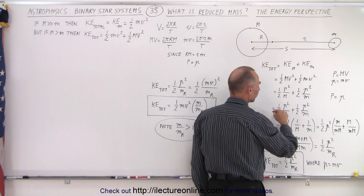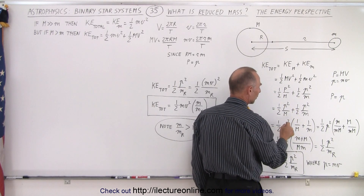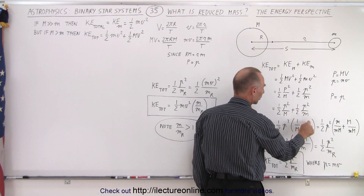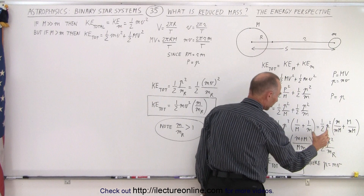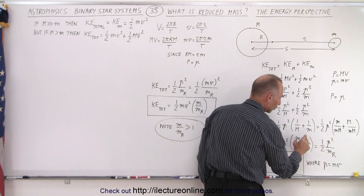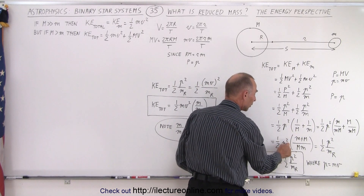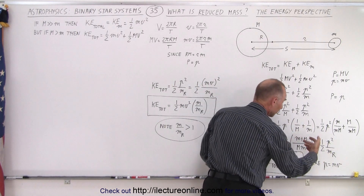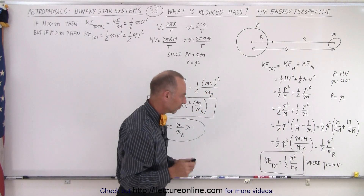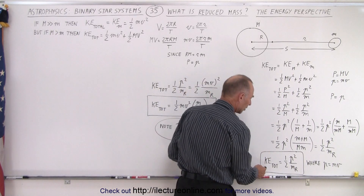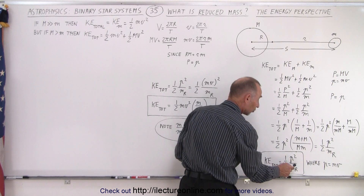Now we have everything in terms of small p. We factor out ½p², and we end up with 1/M + 1/m, which can be simplified — and notice that this is the inverse of the reduced mass. So we take ½p² divided by the reduced mass, since we take the inverse in the denominator. The total kinetic energy then becomes ½p²/μ, the reduced mass.